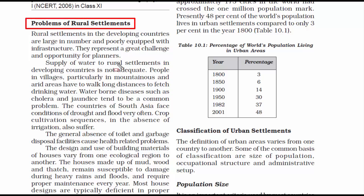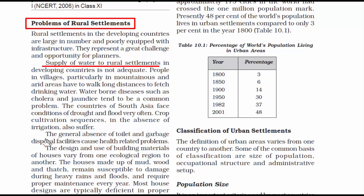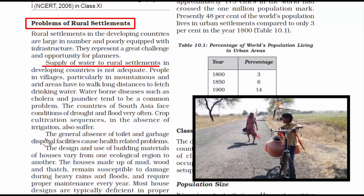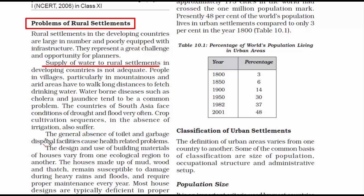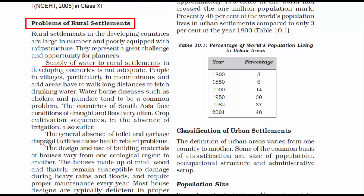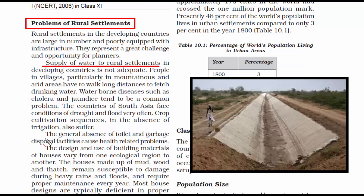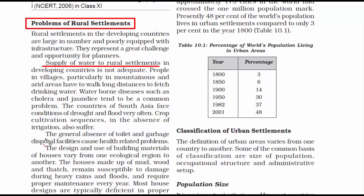Now we read about problems of rural settlements. The first is water problems. Supply of water to rural settlements in developing countries is not adequate, especially when settlements are large in number and poorly equipped with infrastructure. People have to travel long distances to fetch water. Waterborne diseases like jaundice and cholera are very common, and the water in rural areas is often contaminated. Countries of South Asia also suffer from drought and flood conditions — being closer to the equator, rivers dry up, groundwater depletes, and agriculture suffers.